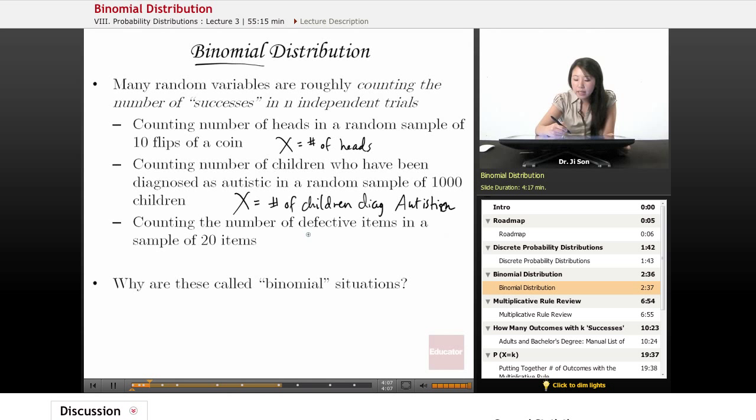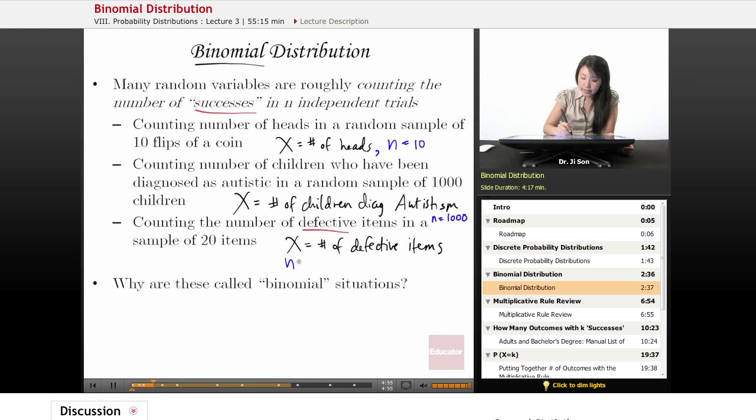Another example is counting the number of defective items in a sample of 20 items. Notice that when you think of the word defective, you don't really think of that as successes. But what we're doing is we're counting some outcome of interest for every n trials. In this case, n is 20. So here, X equals number of defective items. And just to round it out, let's talk about what the n is here. So n, in this case, is 10, n in this case is 1,000, and n in this case is 20.